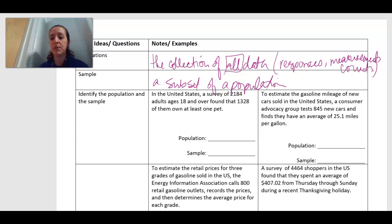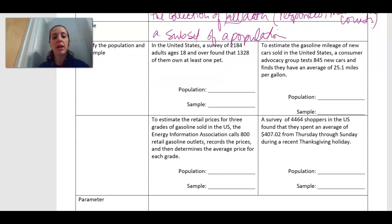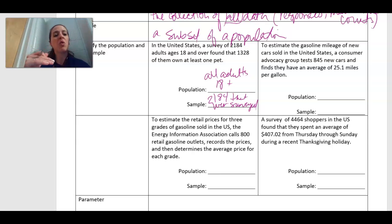So let's look at these couple examples. In the United States a survey of 2,184 adults ages 18 and over found that 1,328 of them own at least one pet. So the population here would be all adults that are 18 years or older. We're gathering data and analyzing about all adults. So the sample that we looked at was 2,184 that were surveyed. That's the people we actually looked at and got information about.